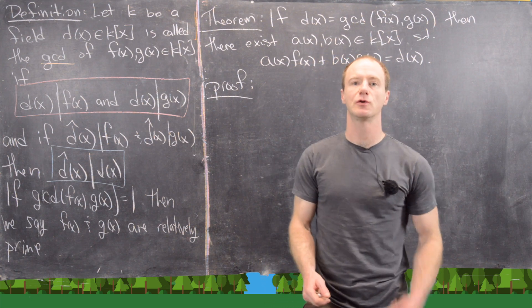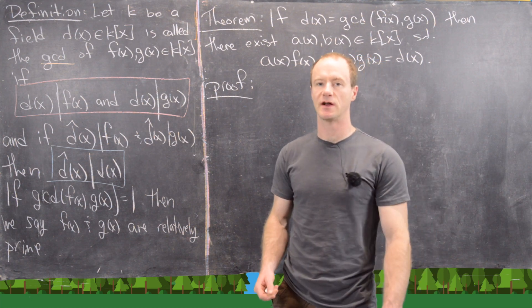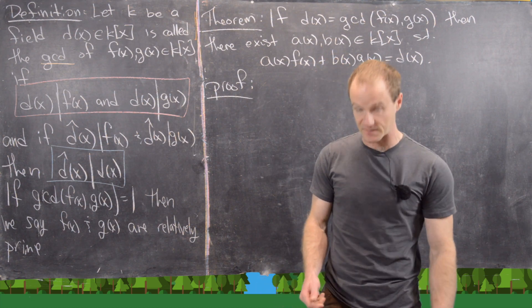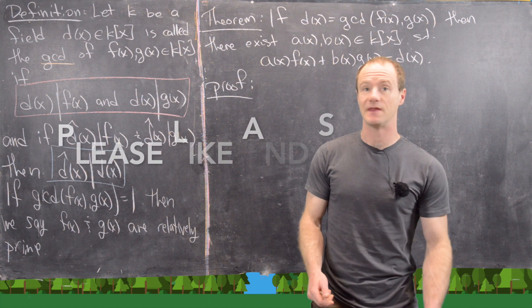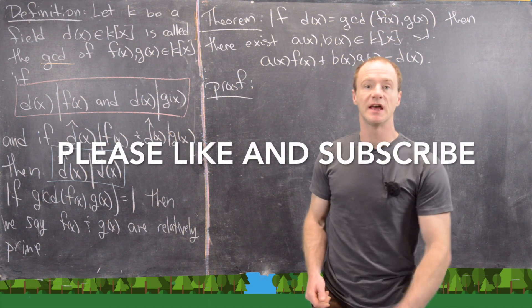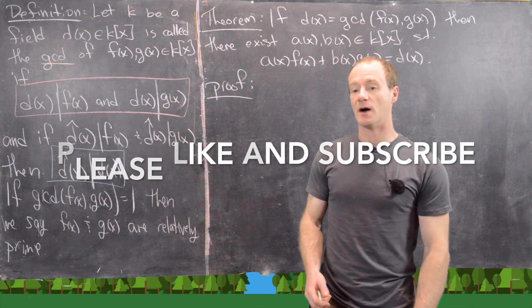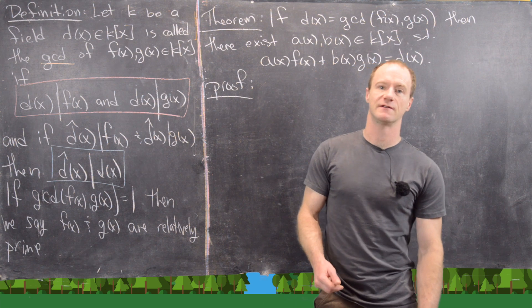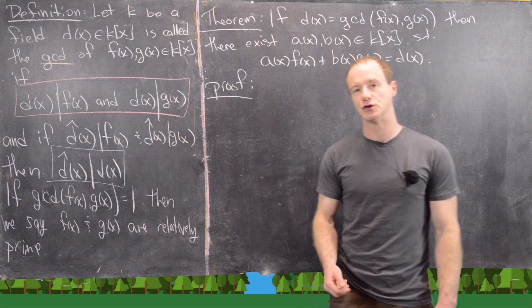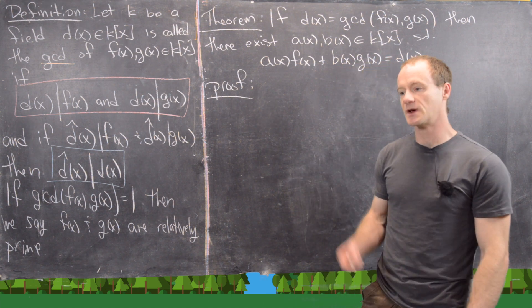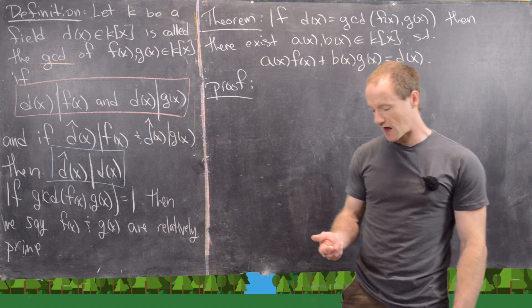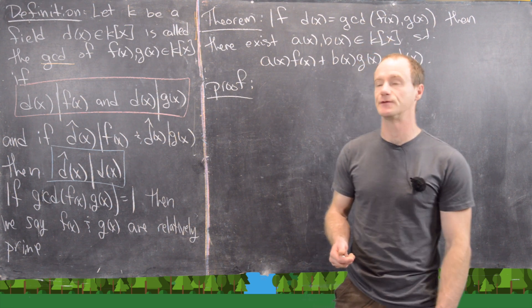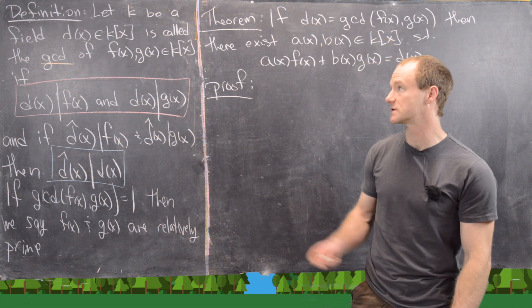In this video we're going to continue proving the similarity between polynomial rings over a field and the integers. We're going to prove a property that has to do with the greatest common divisor of two polynomials. But before we do that we need to look at the precise definition of the GCD of two polynomials.